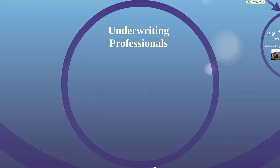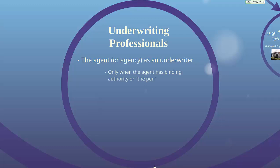Now let's talk about who underwriting professionals are. The agent or agency is often an underwriter when the agent has binding authority or the pen — the ability to issue a binder on behalf of a company. Some agents have binding authority for only one company, while independent agents may have binding authority for many companies. Agents are also known as the field underwriter. The insurance company must be careful to realize that an agent's underwriting could be biased — agents generally stand to gain a commission from underwriting a risk, and they may be less likely to turn away a friend or someone they know well.